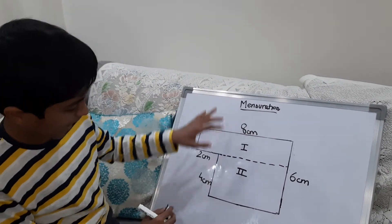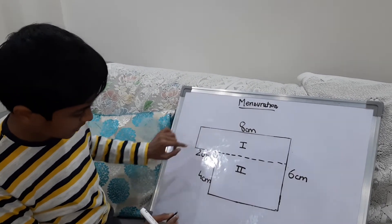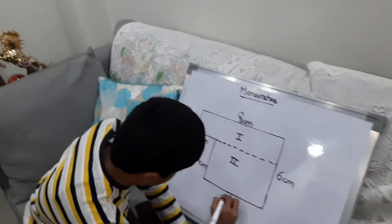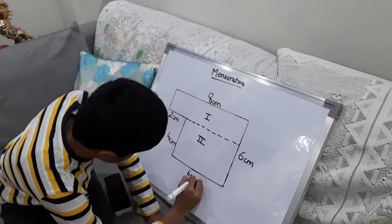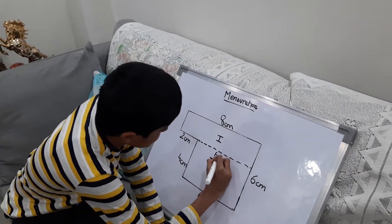To find this number, we will do 8 minus 2. 8 minus 2 is 6. So here we will write 6 cm. If this is 6 cm, so this will also be 6 cm.